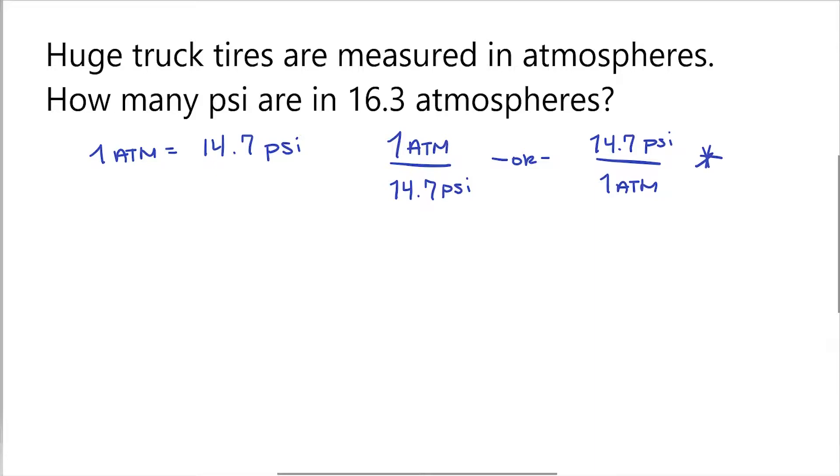So now let's solve this question. We're going to use what we know, which is 16.3 atmospheres. And then we're going to use our fraction, so 14.7 psi over 1 atmosphere. Now we're going to take the tops and multiply those together. So 16.3 times 14.7 is equal to 239.6. And we also need to multiply our units together. So we have atmospheres times psi.